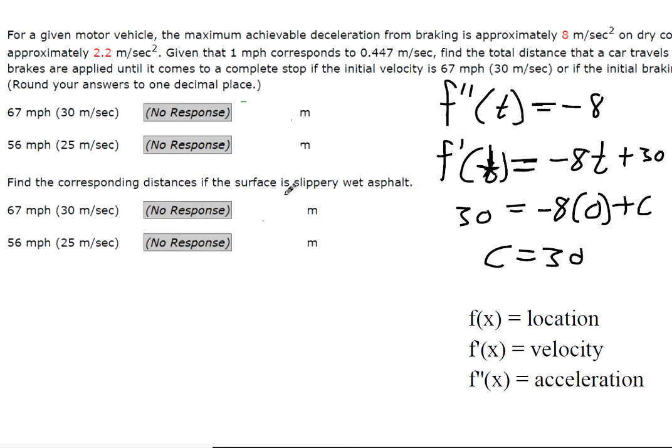Okay, and then same thing with slippery wet asphalt, except there's different numbers. It's a different acceleration. I should say deceleration. So your second derivative should be equal to negative 2.2. Okay, that would, you find the anti-derivative, just like we did before. That would give you your velocity function, and then this is your initial velocity. That's what your C will be. So it's repeating the same steps three more times that we did for the first one here.